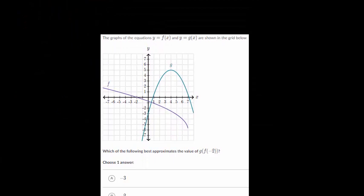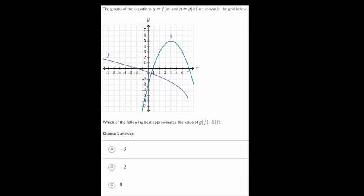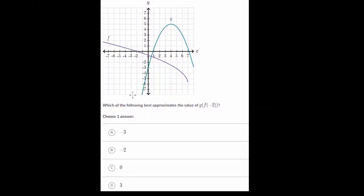So let's do another one like that. And this one has f and g. And we want to know what best approximates the value of g of f of minus two. So we again, like always, start on the inside. Start with f of minus two. So we go to our graph f, we find minus two, and that looks to be that point right there. So that's equal to zero.